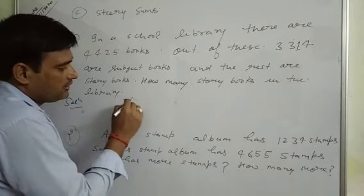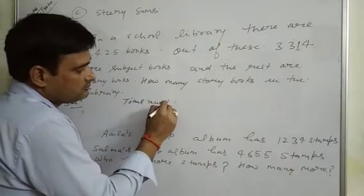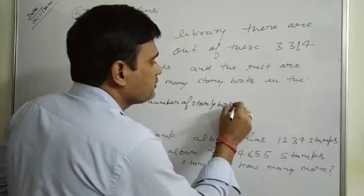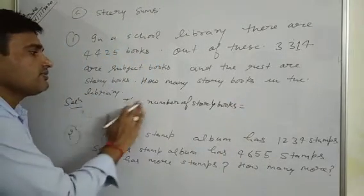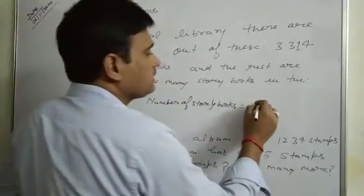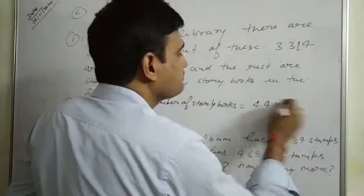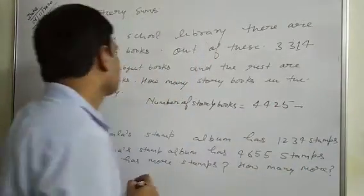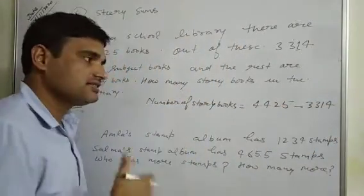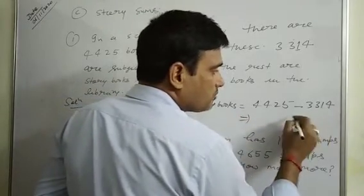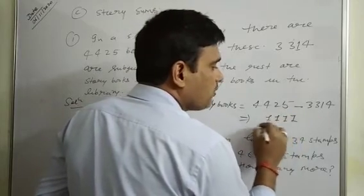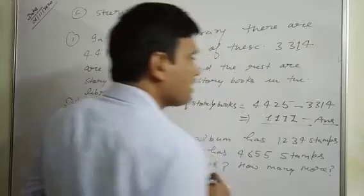Solution: Total number of story books equals total number of books minus subject books. That's 4425 minus 3314. 5 minus 4 is 1, 2 minus 1 is 1, 4 minus 3 is 1, and 4 minus 3 is 1. The answer is 1111 story books in the library.